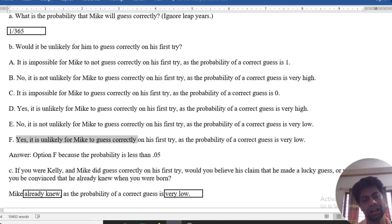Yes, it is unlikely for Mike to guess correctly on his first try, as the probability of a correct guess is very low. It is less than 0.05. Then our option is F.